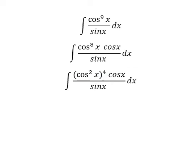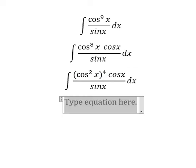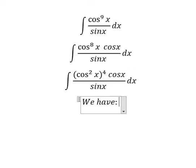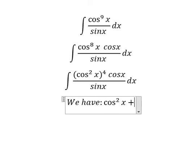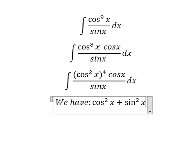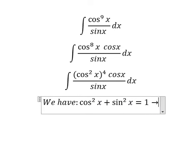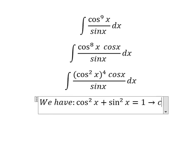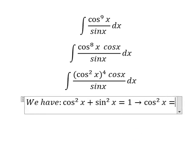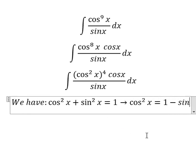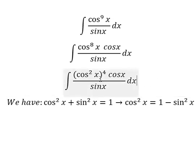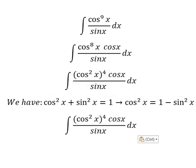Next, we have the formula: cos squared x plus sin squared x equals 1. So we move sin squared x to the right, and we have cos squared x equals 1 minus sin squared x. We substitute this into our expression.